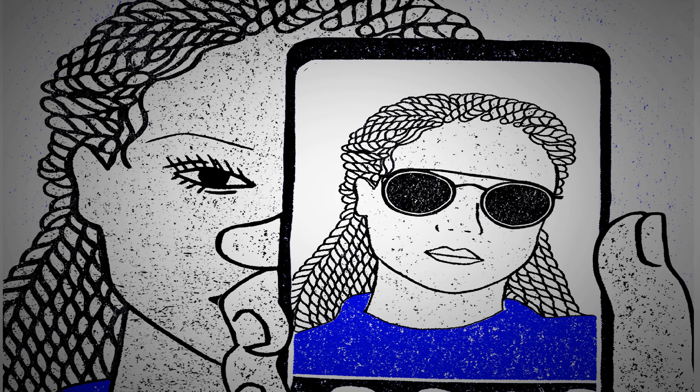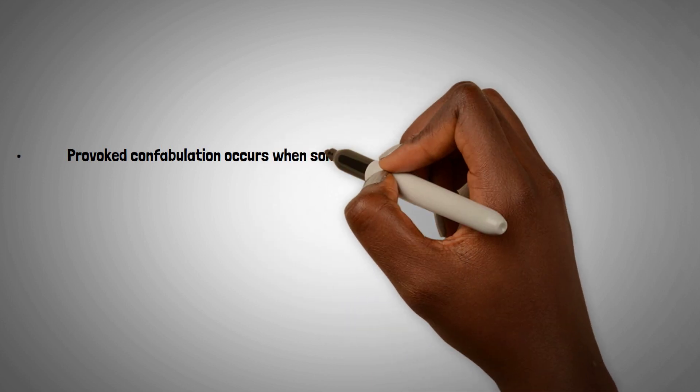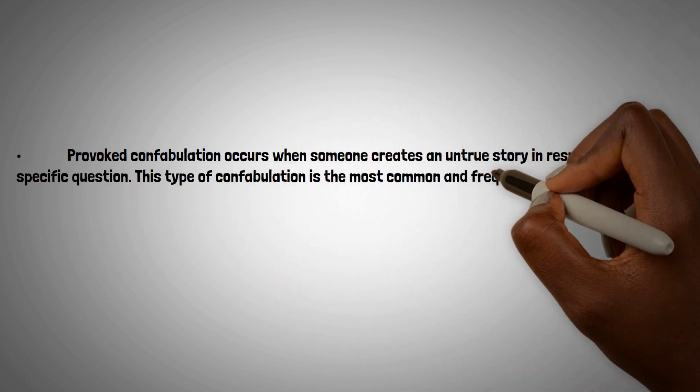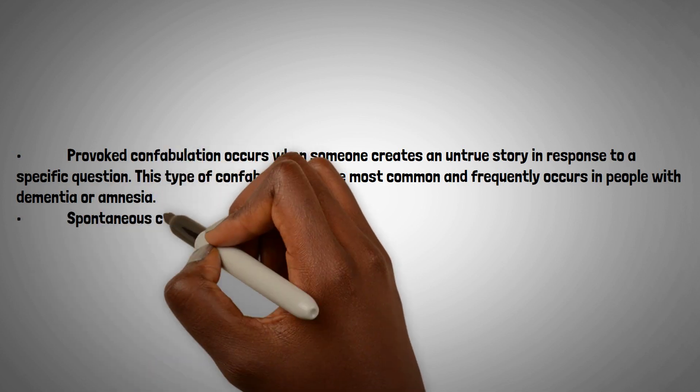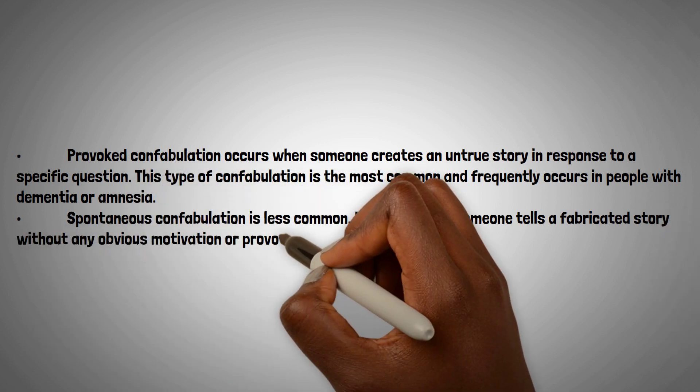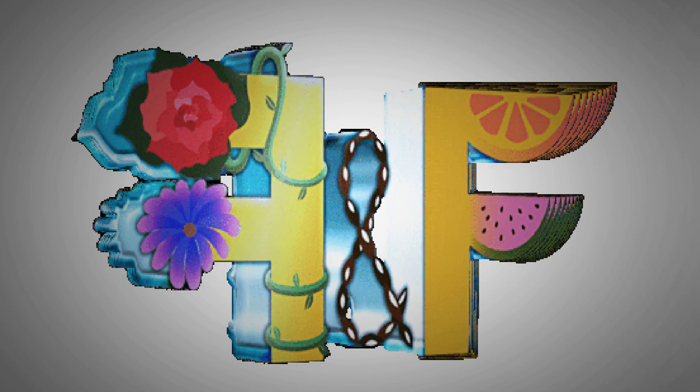Rather, they are confident in the truth of their memories. There are two types of confabulations, provoked and spontaneous. Provoked confabulation occurs when someone creates an untrue story in response to a specific question. This type of confabulation is the most common and frequently occurs in people with dementia or amnesia. Spontaneous confabulation is less common. It occurs when someone tells a fabricated story without any obvious motivation or provocation. These are the signs and symptoms of a confabulation. Lack of awareness that a memory is false or distorted. There is no attempt to deceive or lie. The story is usually drawn from the person's memory. The story can either be very probable or very improbable.